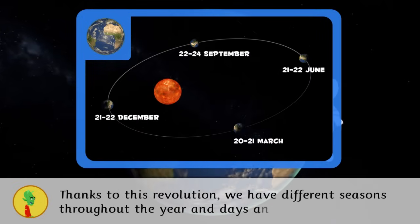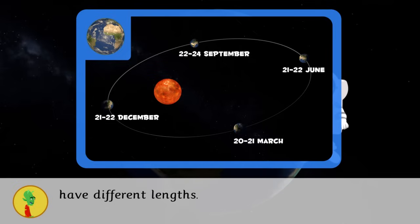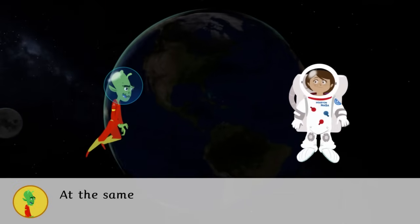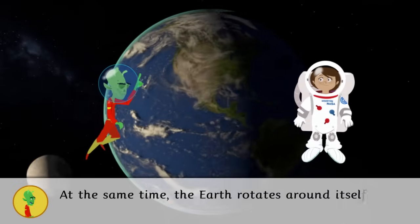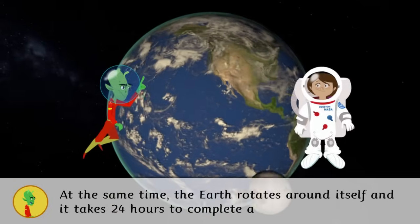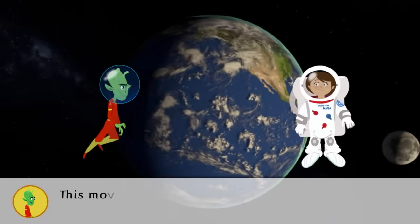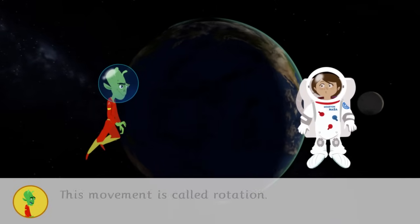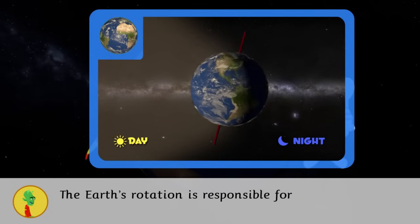At the same time, the Earth rotates around itself and it takes 24 hours to complete a full trip. This movement is called rotation. The Earth's rotation is responsible for the change between day and night.